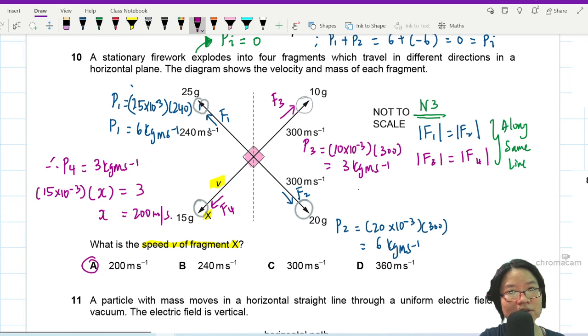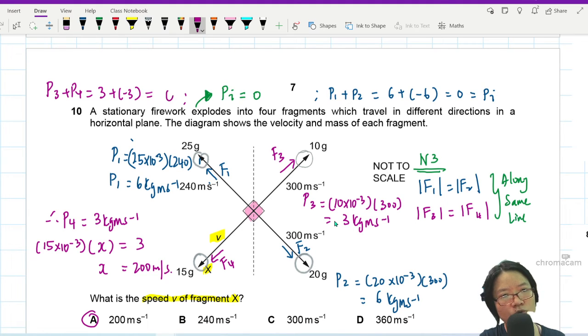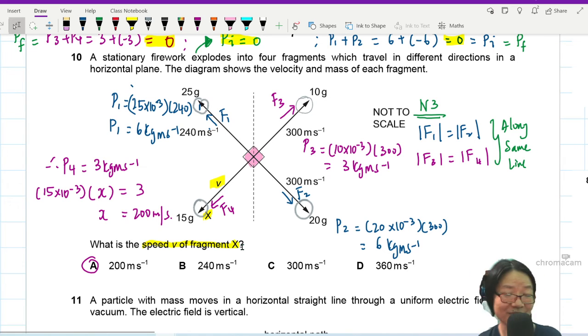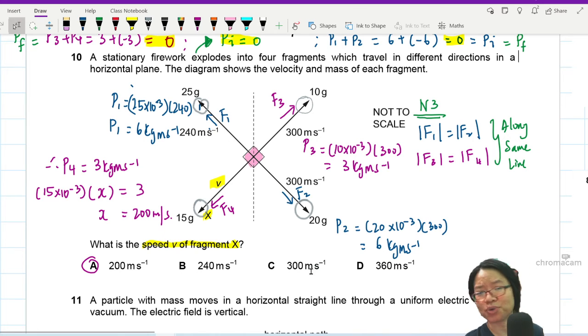If you take the momentum P3 plus negative P4 because they're in opposite direction, you will still get 0. Because they happen to be 90 degree to each other. If they are not 90 degree, then everybody have to resolve. You have to do accounting. You resolve F1 into x and y component. You resolve F2 in x and y component. F3 in x and y component. F4 in x and y component. And you add everything together. I don't know why this paper is very vector paper. They are testing your understanding of vectors in so many different ways. Which means if you don't know vectors, it's a GG.